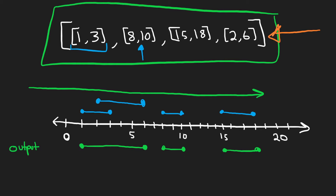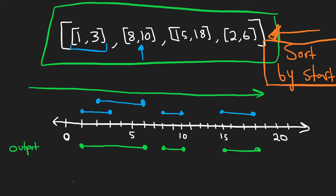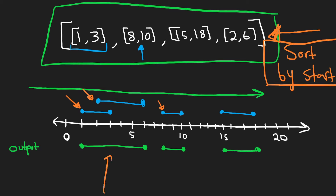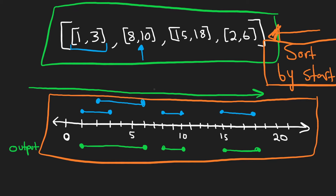To summarize the algorithm: sort the intervals by start value, then iterate through them. Each time, check whether the current interval overlaps with the previous one. If it doesn't, do nothing extra. If it does, merge them into one interval. This interval problem is actually straightforward — sort then merge — but for harder interval problems, drawing a number line really does make things much easier to solve.